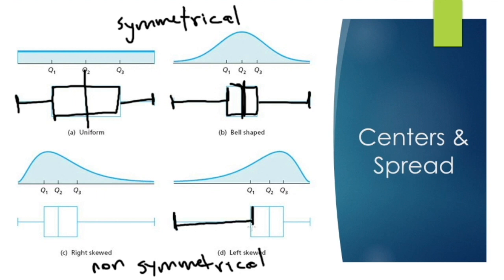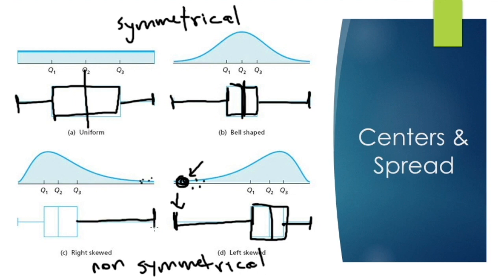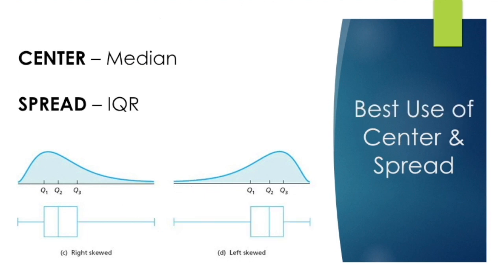Looking at how box plots represent these shapes: for uniform and bell-shaped data, we have symmetry — the left and right whiskers are the same length and the box is balanced. These are called symmetrical distributions. For non-symmetrical distributions, the whisker on the left is much bigger than the right — this is called left skewed. If the high values make the right whisker much bigger, that is right skewed.